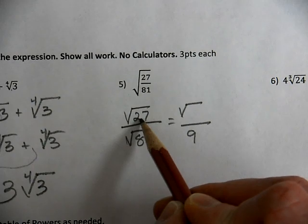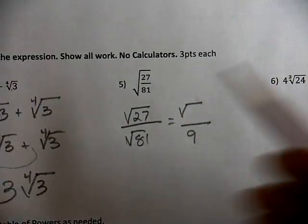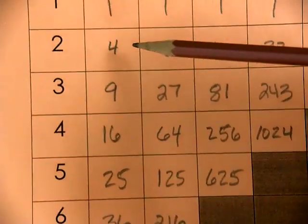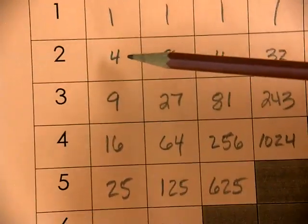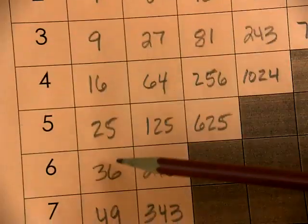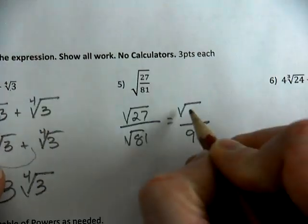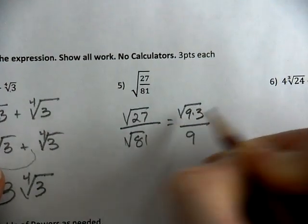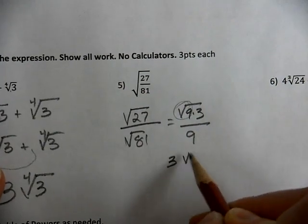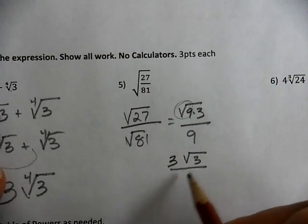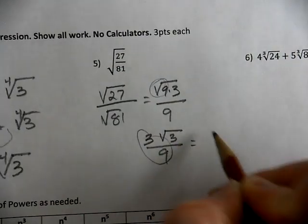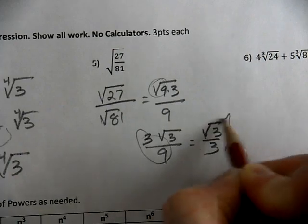Now, to work with 27, I need to think about which ones of these numbers goes in. Which one of these numbers goes into 27? It's only 9. 9 times 3 is 27. I know the square root of 9, and I can reduce. So this is the cube root of 3 over 3.